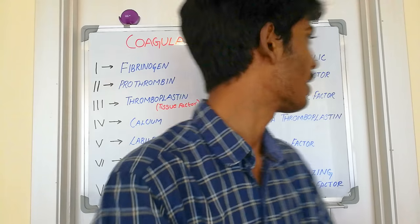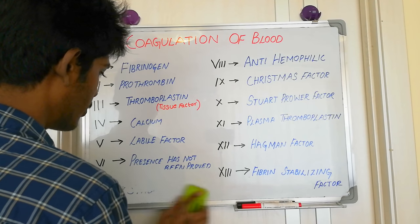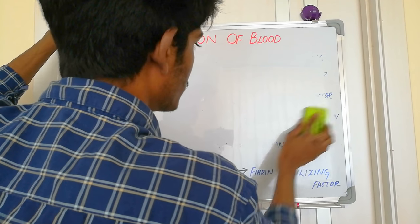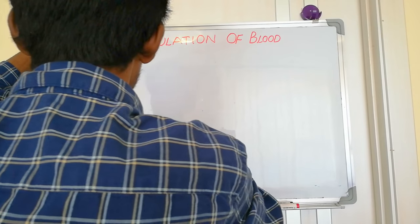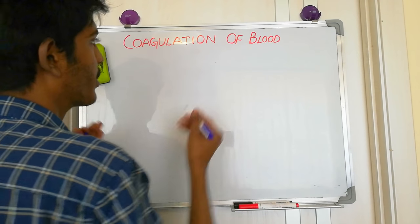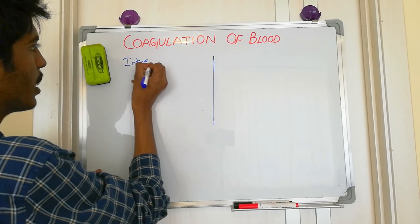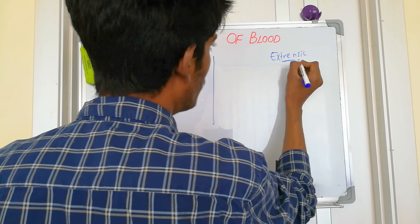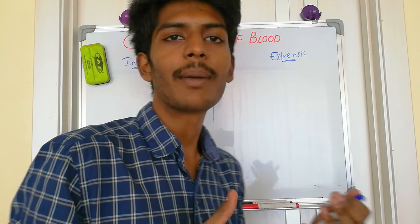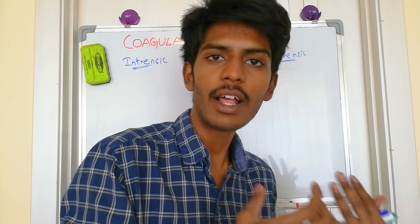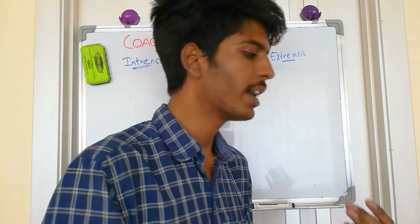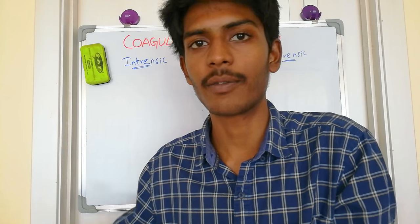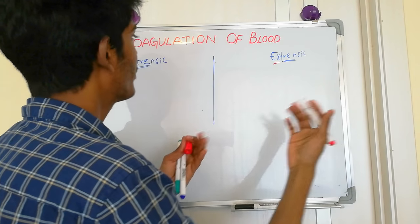Both pathways are involved in formation of the clot. The intrinsic pathway is triggered by substances present in the blood or plasma itself, whereas the extrinsic pathway is triggered when tissue is damaged and releases substances that trigger clot formation. To remember: extrinsic is from external — not from the blood — and intrinsic is from internal, from the blood or plasma itself.